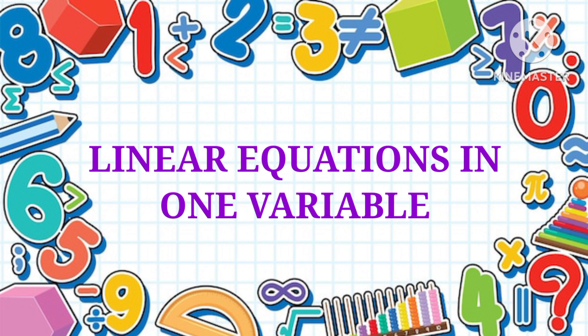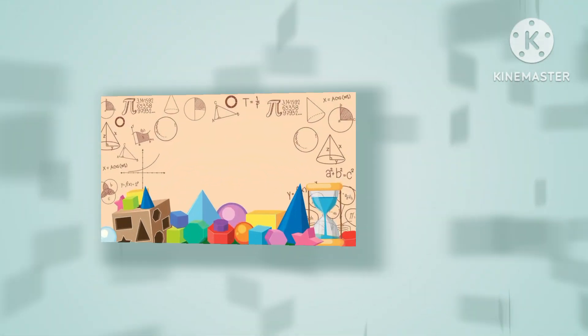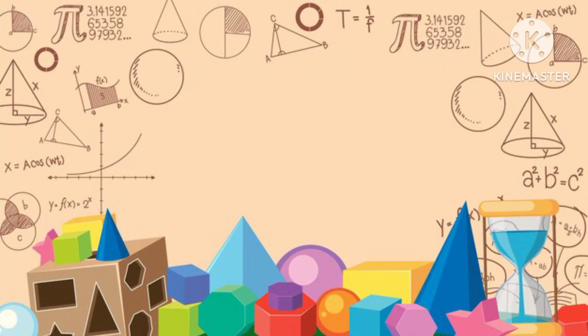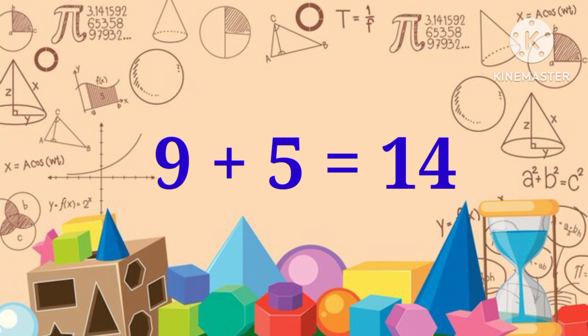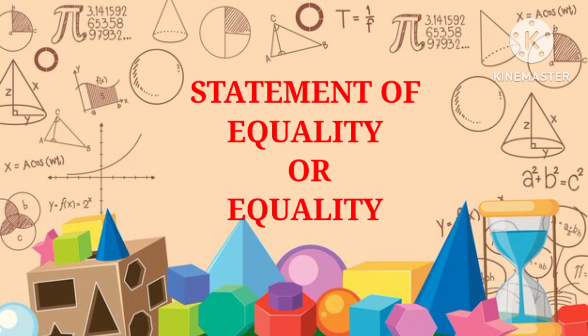Let's get started. First, let's understand what is an equation. Here is a statement: 9 plus 5 equals 14. In this statement, the equal symbol or equal sign is there. Such a statement involving the equal sign is called a statement of equality or simply an equality, but there are no variables in this kind of statement.